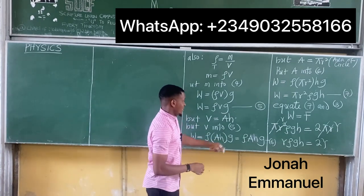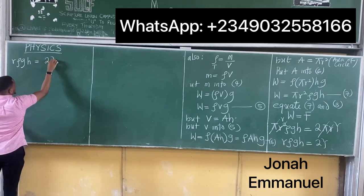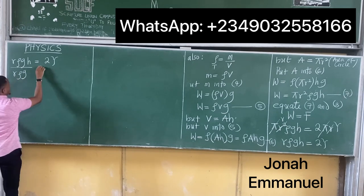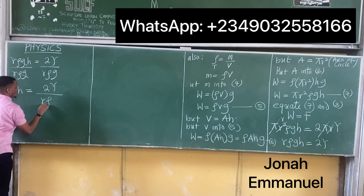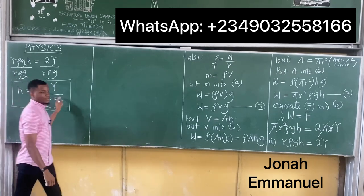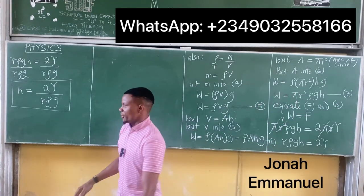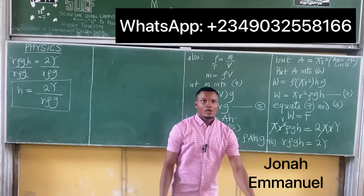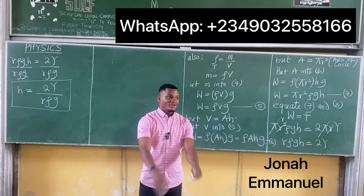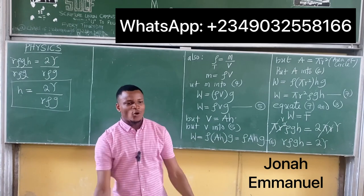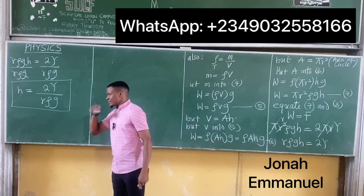From rρgh = 2γ, let's make h the subject. Dividing both sides by rρg: h = 2γ / (rρg). This is the equation we were looking for. Here h is the height of the liquid in the container.